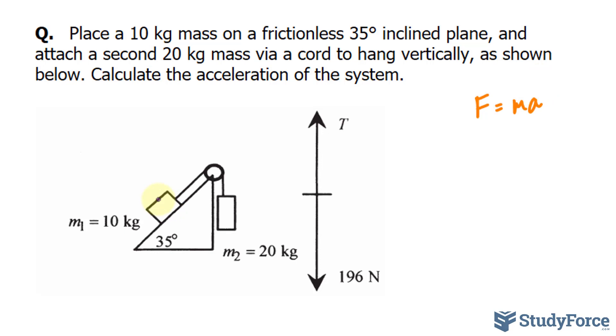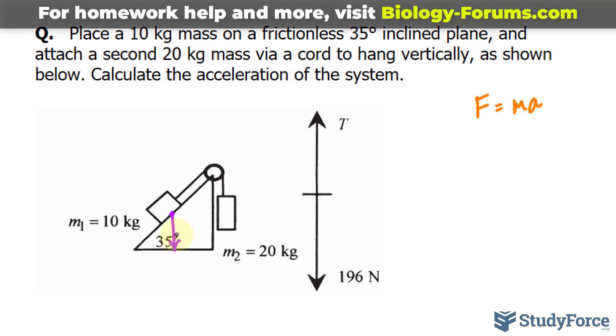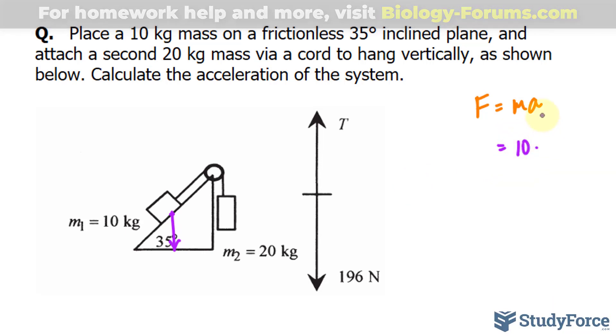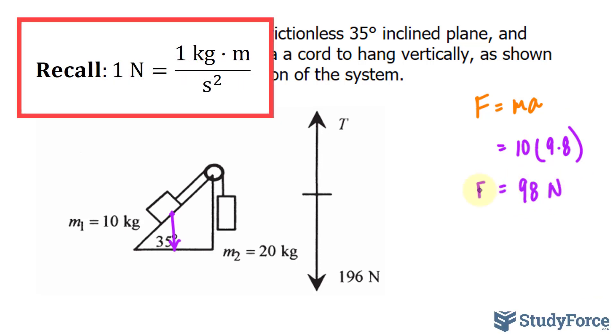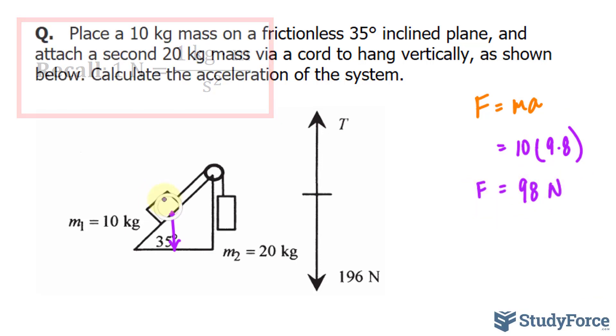I can draw a vector to represent the force due to gravity where here is a vector going directly down. To find out the force of this vector, I'll take the mass of 10 kg and multiply it by the acceleration due to gravity which is 9.8. Multiplying these two numbers out, I should end up with 98 newtons.